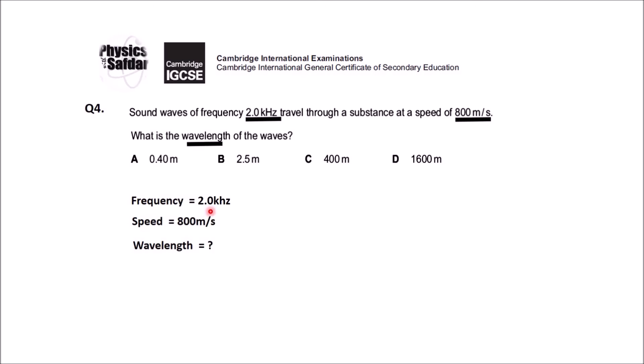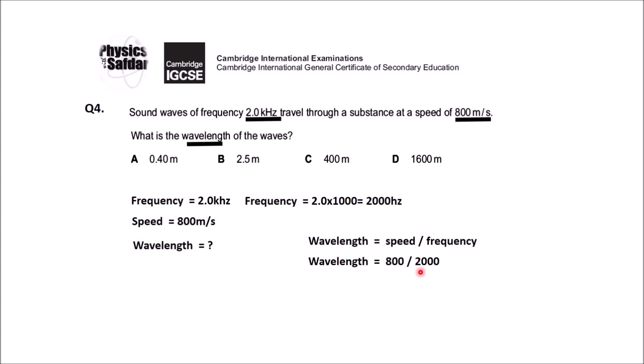The frequency is in kHz, which is not the SI unit, so convert: 2.0 kHz × 1000 = 2000 Hz. Now use the formula: wavelength = speed ÷ frequency. Substituting: 800 ÷ 2000 = 0.40 meters. That is the required wavelength. Checking the options — A is 0.4, B is 2.5, C is 400, D is 1600 meters — so option A is the right answer.